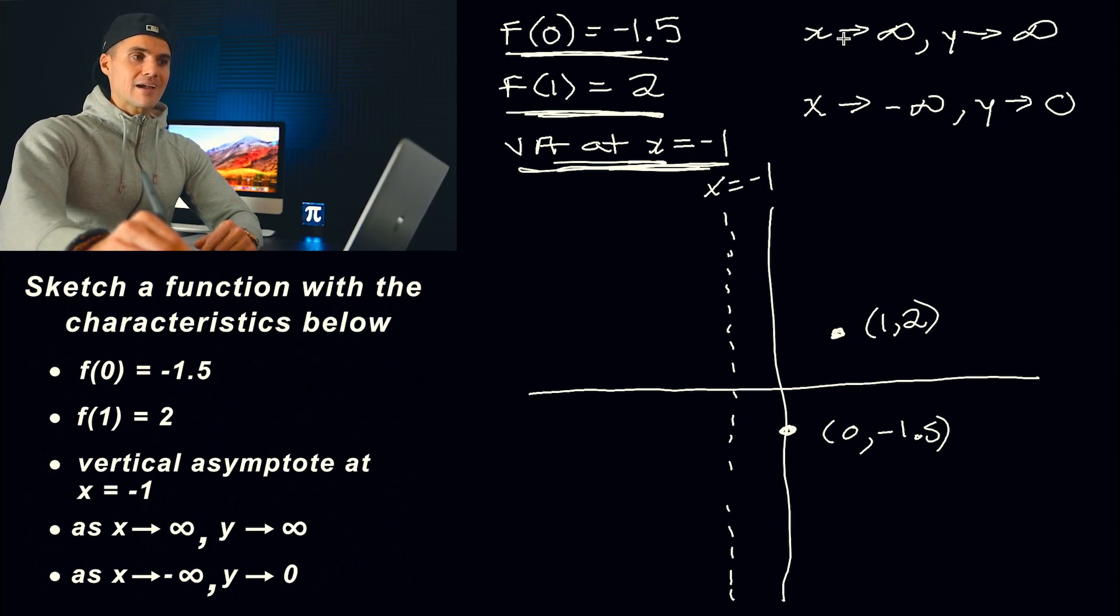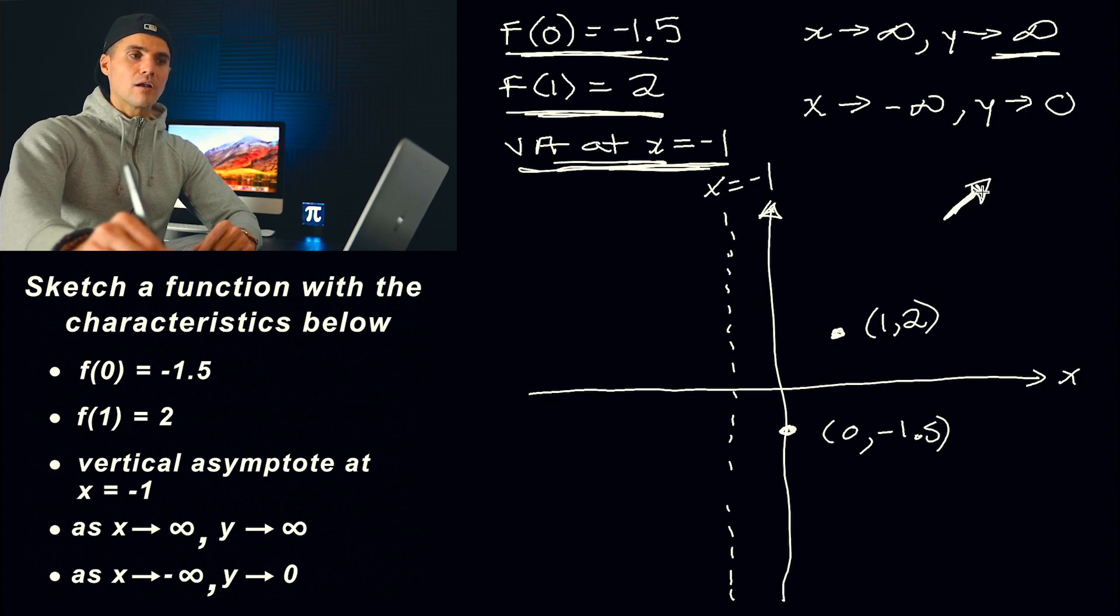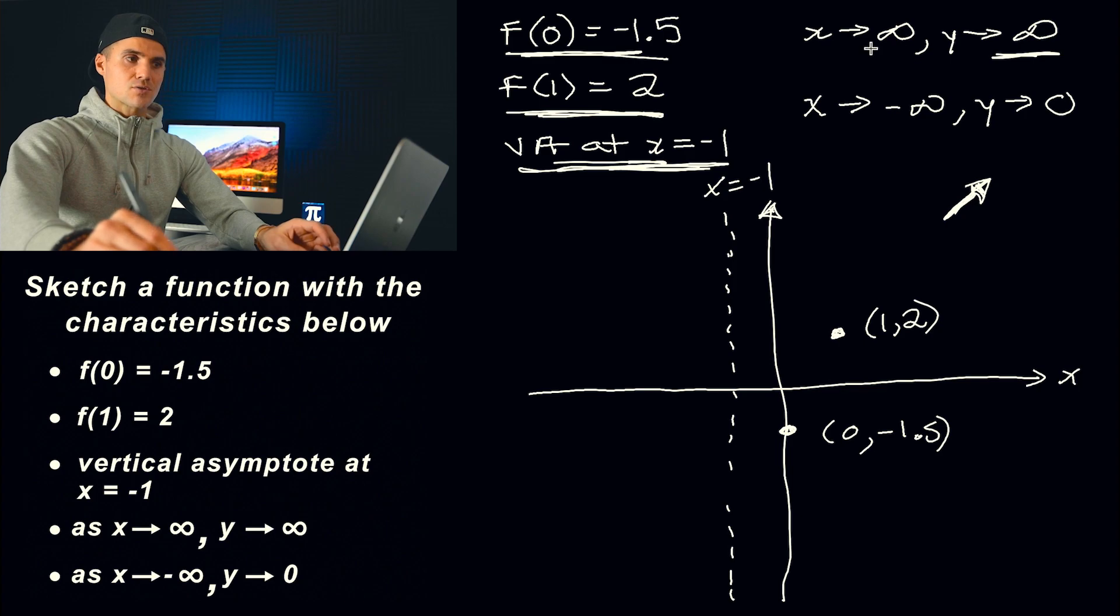So as x approaches infinity, the y values also approach infinity. And so notice that this is dealing with the behavior, the end behavior of this function on the right side. So these are the x values. As x approaches infinity, the y values are also approaching positive infinity. So we know that the end behavior is going to be on this quadrant right here. So we know that the function is going to be going off infinitely in that direction as x goes to infinity.